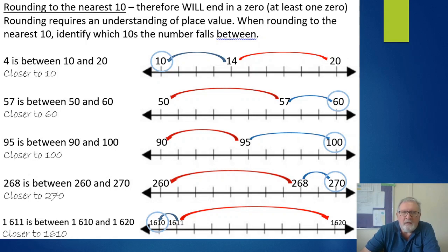Let's start having a look. We're going to start with rounding to the nearest 10. Now if we're rounding to the nearest 10 it will end in a zero - so it's 10, 20, 30, 40, all the way through to even larger numbers. There's going to be at least one zero. If it was rounding to the nearest 10 and it was close to say 200, then it would end in two zeros. Rounding does require us to have an understanding of place value.